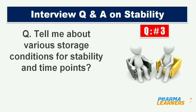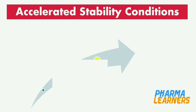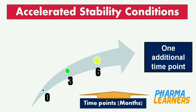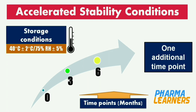Now the next question is: tell me about various storage conditions for stability and time points. For accelerated conditions, time points are 0, 3, 6, and one additional time point should be covered. The storage conditions are 40°C ±2°C temperature and 75% ±5% relative humidity.